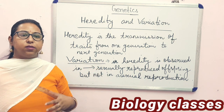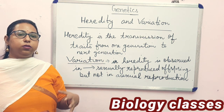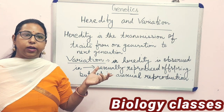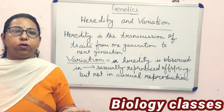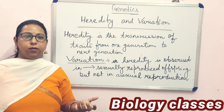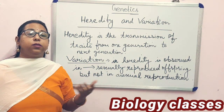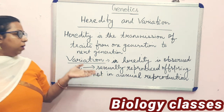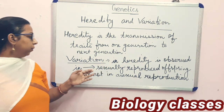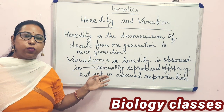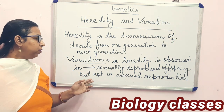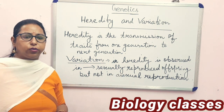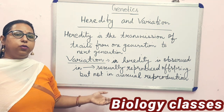Variation is a diversity in characters within a population. For example, you will see different kinds of eye color, variation in height, and variation in complexion. Variation is observed in heredity and is found in sexually reproduced offspring, but it is not found in asexual reproduction. When variation does occur in asexual reproduction, it happens through mutation only. Mutation is a sudden change in genes.